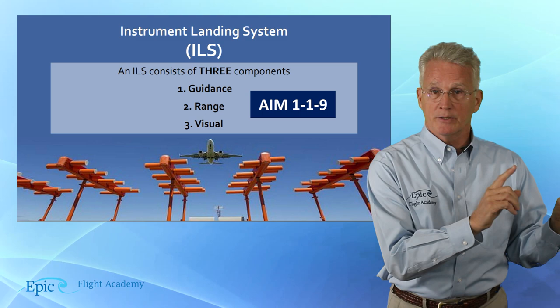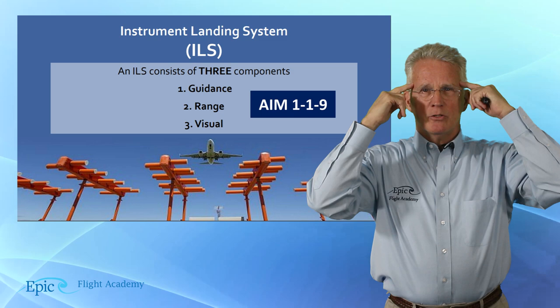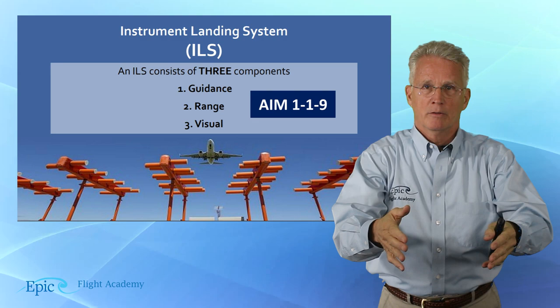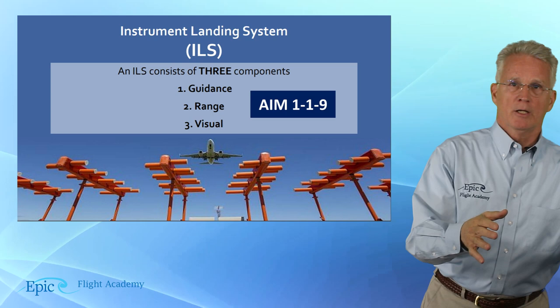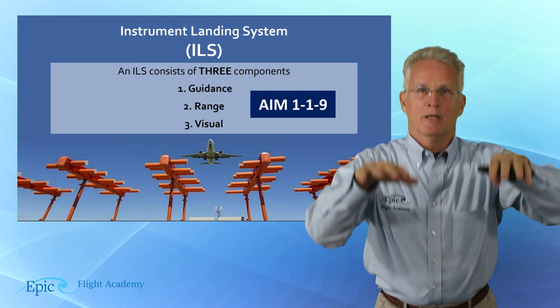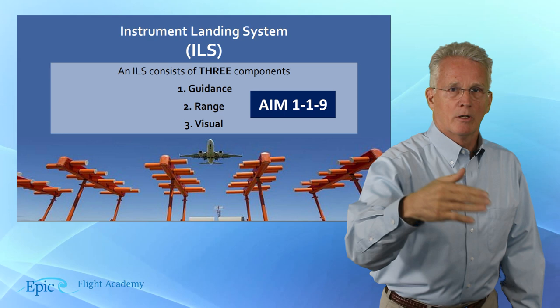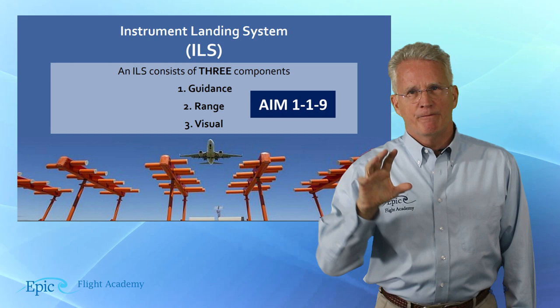First is guidance, second is range, and third is visual. Imagine yourself in the three-dimensional environment — you're bringing this aircraft down to a runway for a safe landing. You're going to need some guidance horizontally and vertically. Secondly, you'll want to know the range from that runway, and then thirdly, some visual contact with it. So let's take these in order.